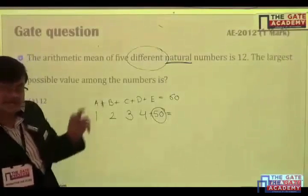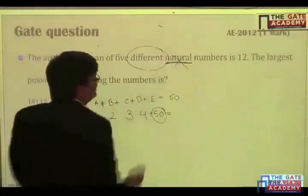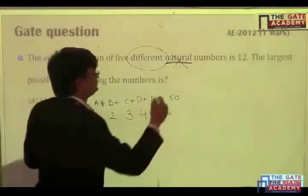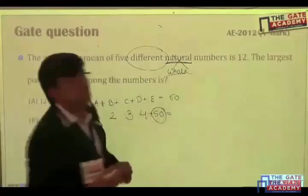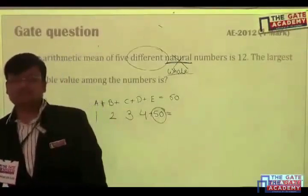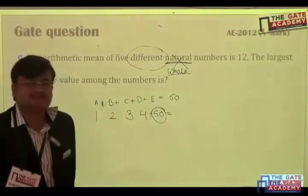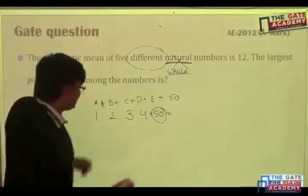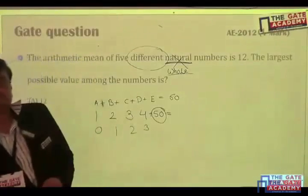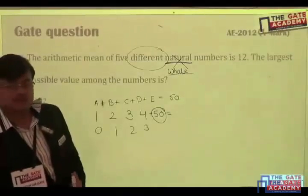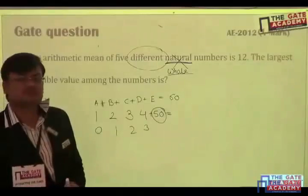Suppose, I will change this question a little bit. Instead of natural, I will write whole. So, what will be the answer? Absolutely correct. 54 will be the answer. Because then we can add 0. 0, 1, 2, 3. So, largest possible value is 54 in this case. Everybody clear? So, please read the question carefully.